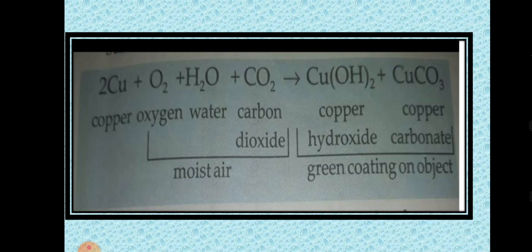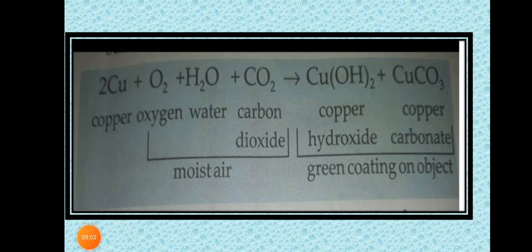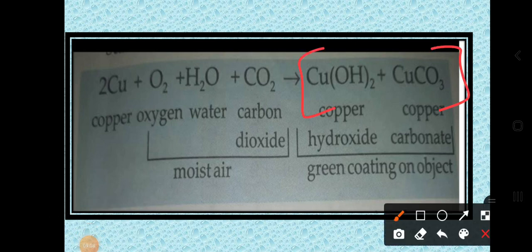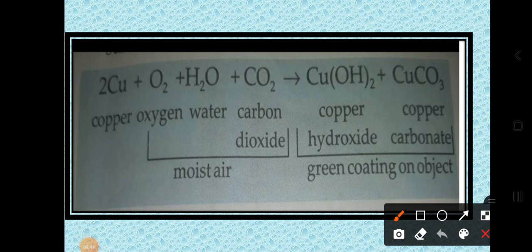This mixture forms the green coating on the copper object. The main components present on the surface of copper that give it a green color are copper hydroxide and copper carbonate. The green layer is a mixture of these two substances — copper hydroxide and copper carbonate — which you can find after keeping a copper vessel for a long time. When copper reacts with oxygen it forms copper hydroxide, and due to the presence of water and carbon dioxide it gives the greenish color.